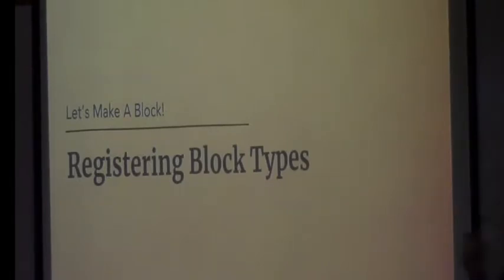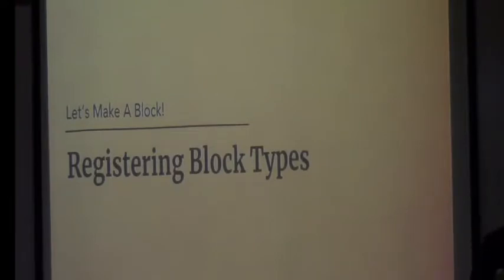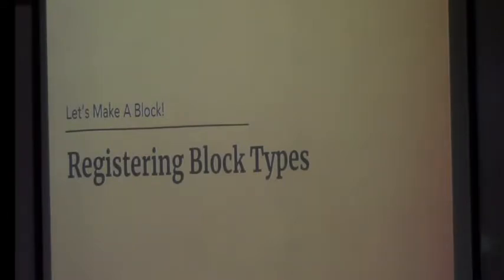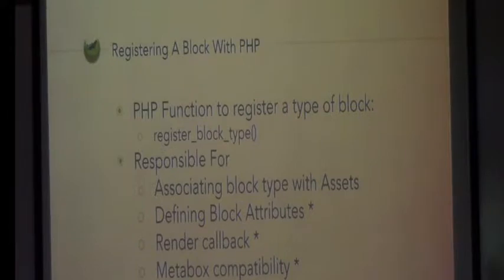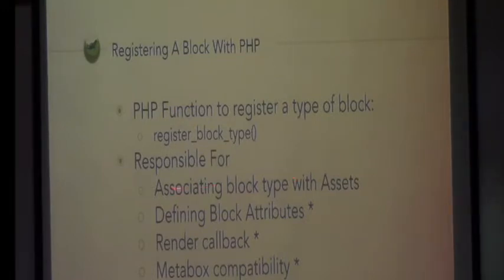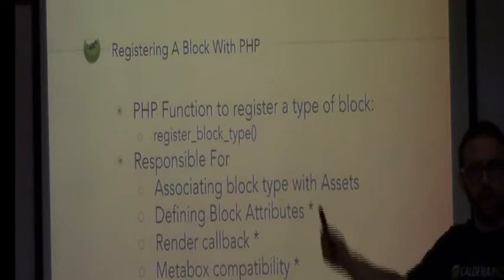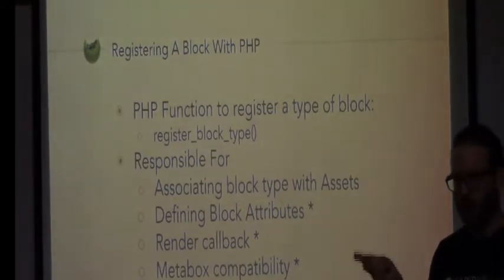Let's make the block. When we think of blocks, there are five paragraph blocks on the page — those blocks have the type 'core/paragraph': core being the namespace, paragraph being the name. So it's a type of block registered in the system, and then we can have many of them in our post. There is a PHP function called register_block_type that registers blocks. The most important thing it does is associate the block type with assets — JavaScript and CSS. You can define block attributes, the render callback, and metabox compatibility.